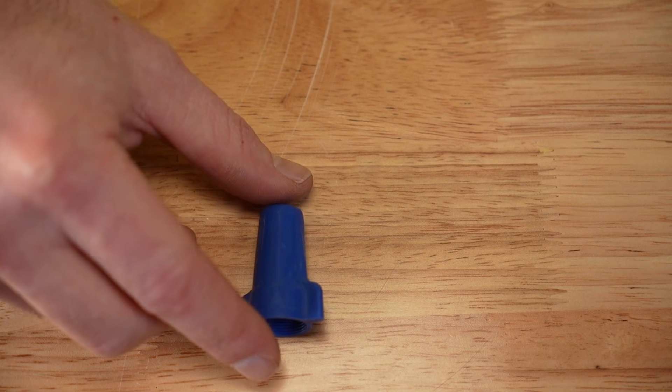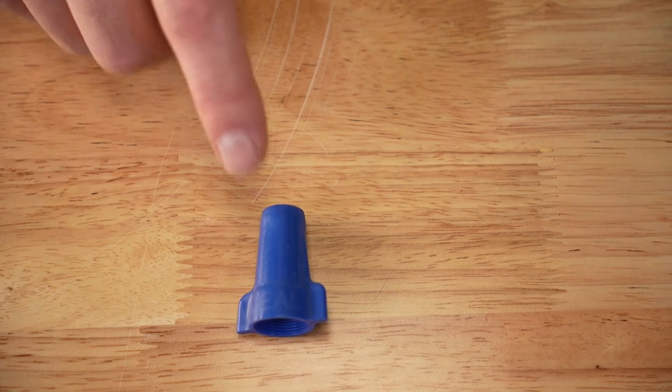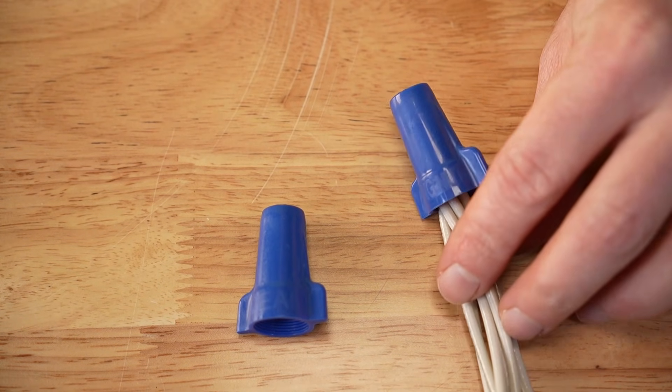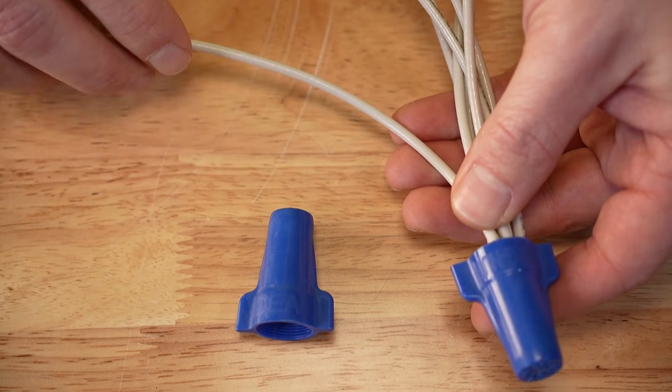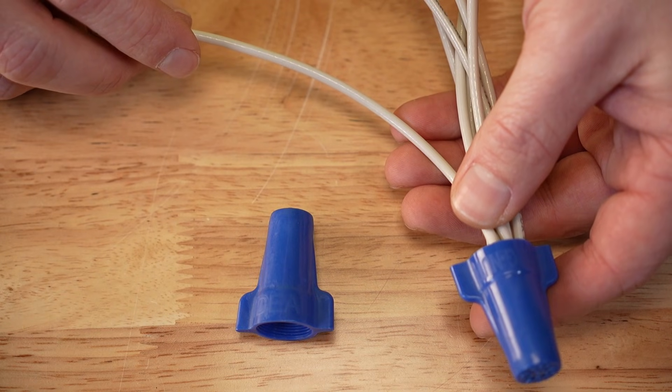These big blue wire nuts are listed for up to six 12 gauge wires, which looks like this. A seventh wire will physically fit, but keep in mind this configuration is not permitted by the manufacturer. There are certainly electricians out there who do this and other unapproved combinations regularly. Just remember that when they do, they are assuming the liability for that connection under their license.